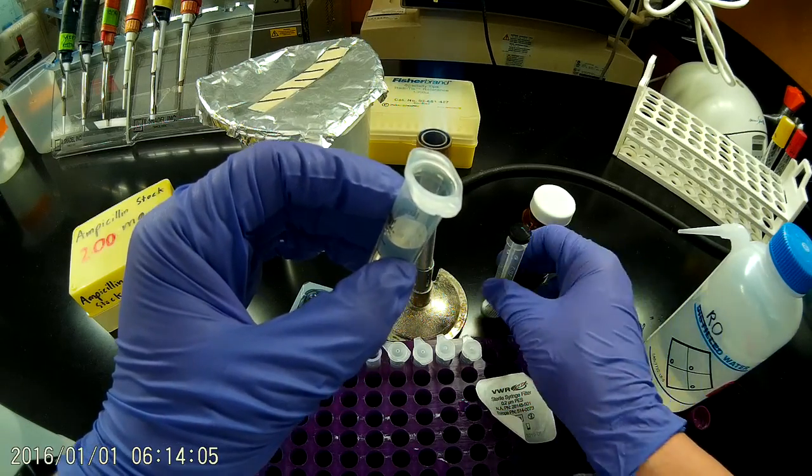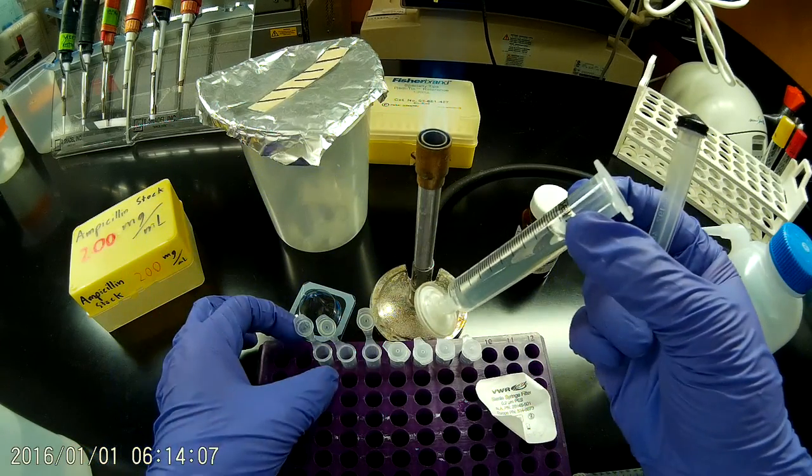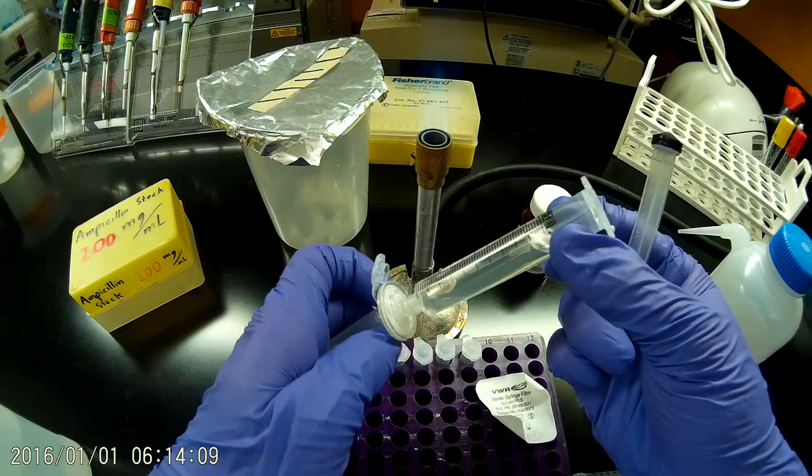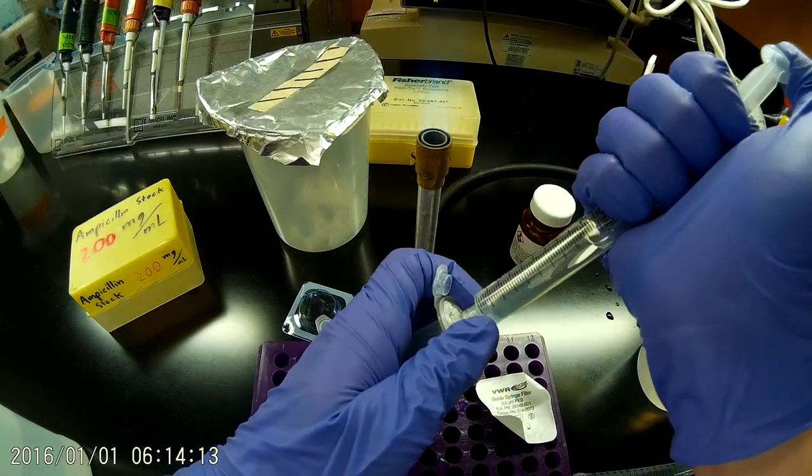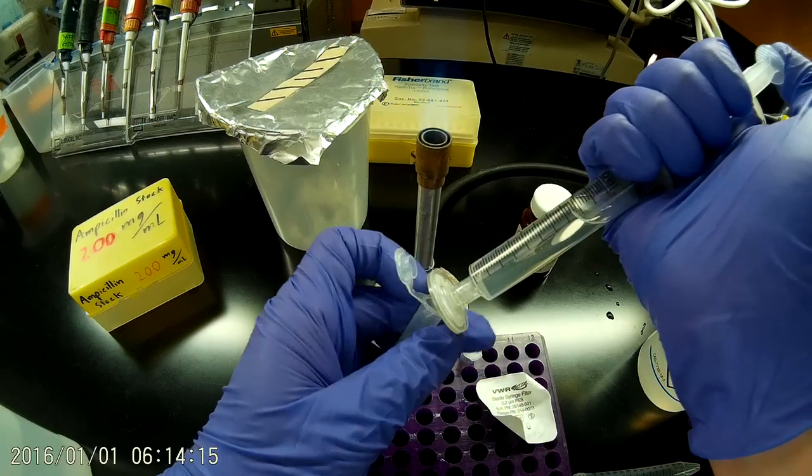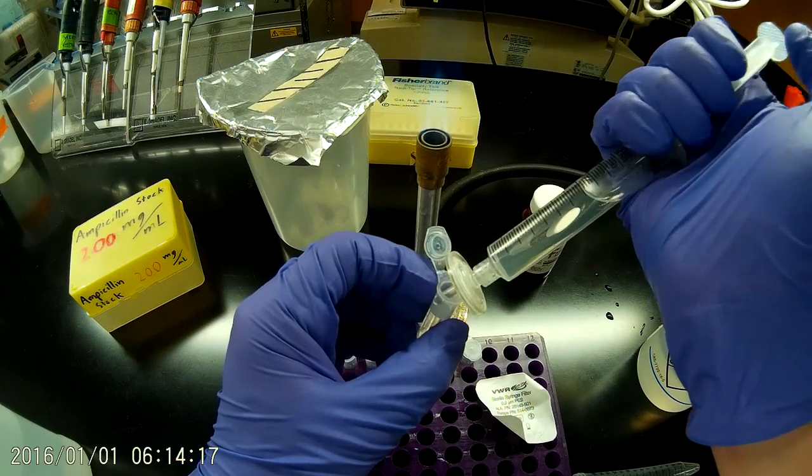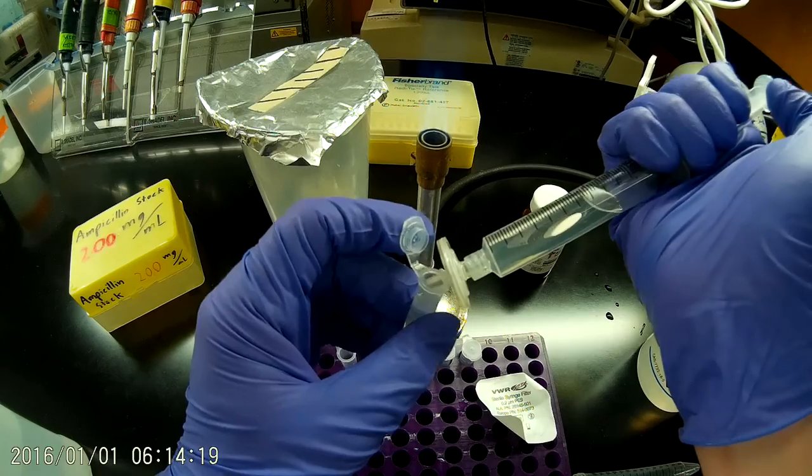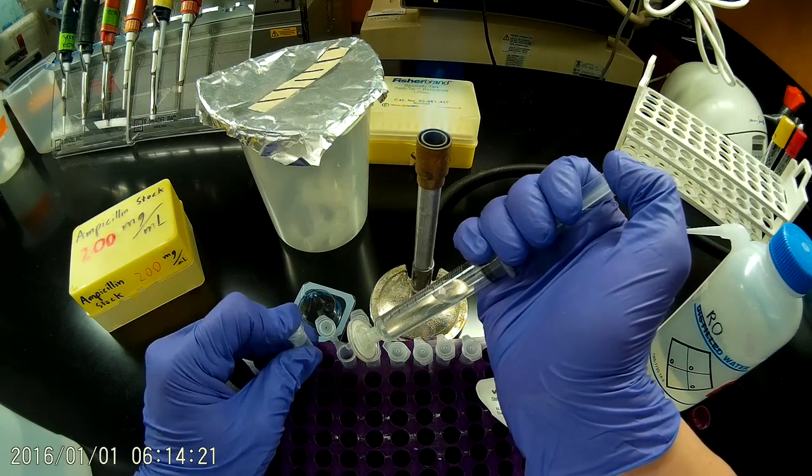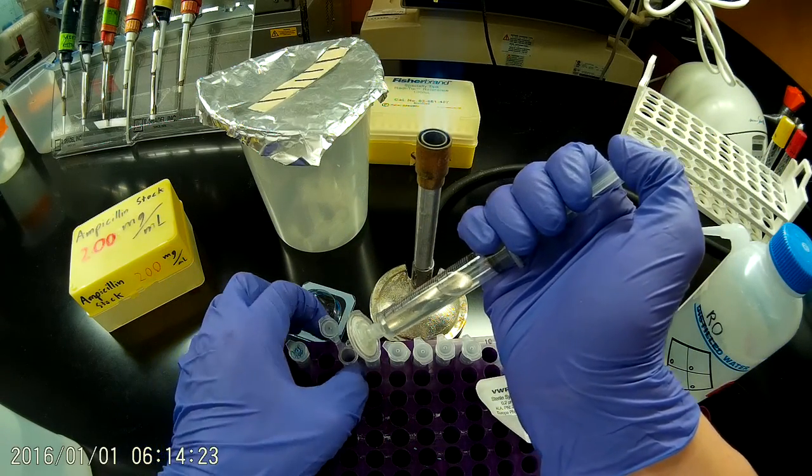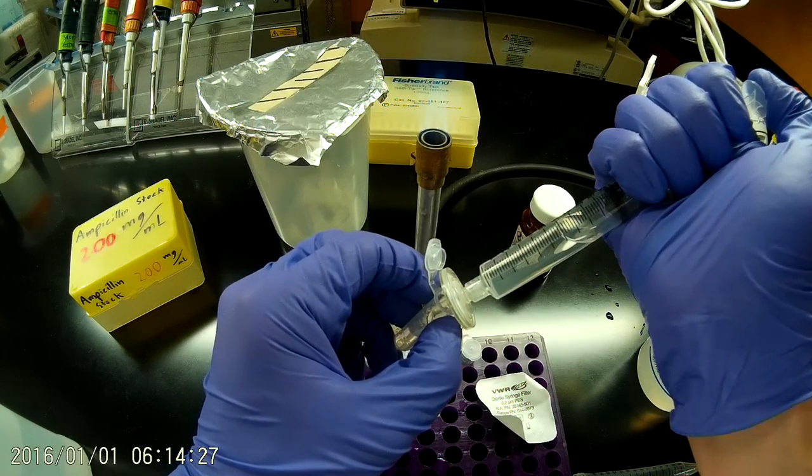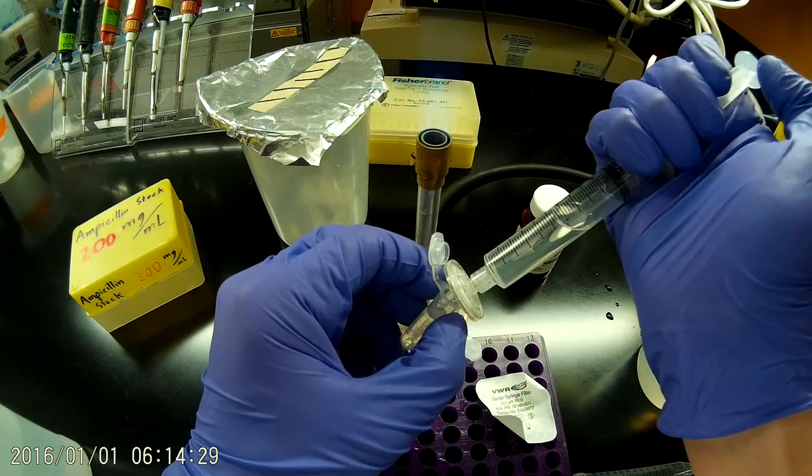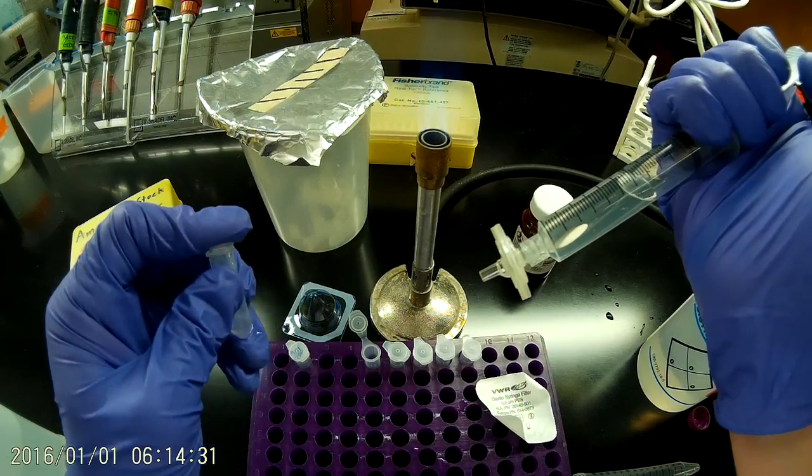I'm going to hold the end of this in one of these tubes while I insert the plunger. I'll fill each one of these tubes with about 1.5 or so mils of the ampicillin stock. That way when they freeze they have some room to expand.